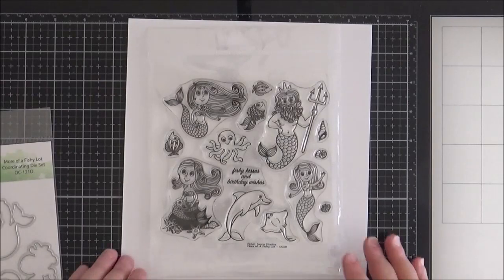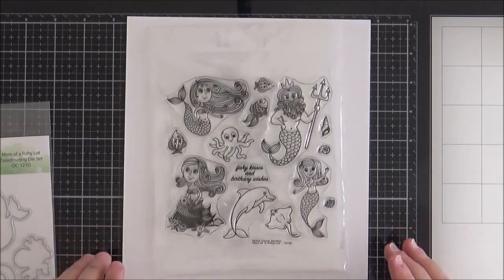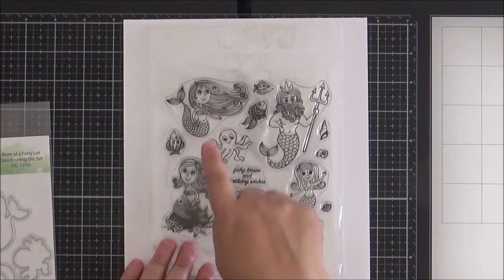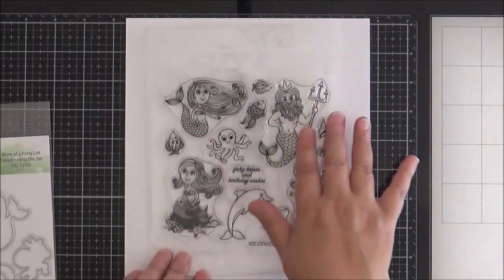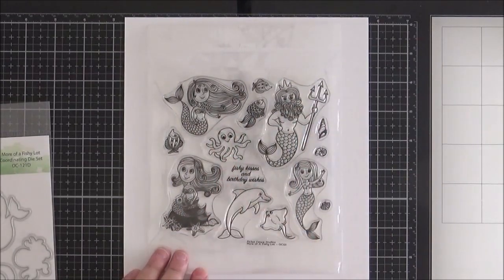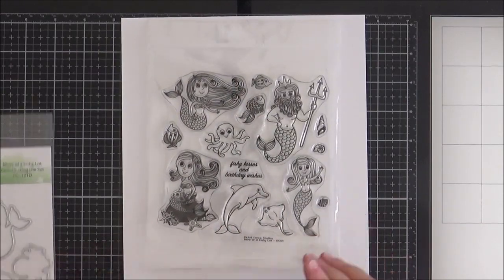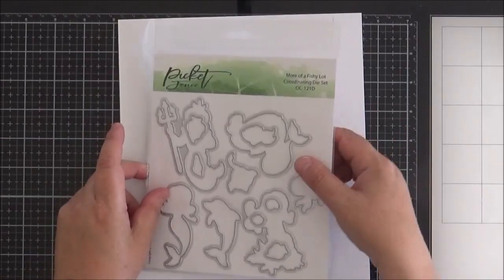And as if that wasn't enough, you have got a second set, and this is called More of a Fishy Lot. So again, you've got some little mermaids there, one of them sitting on a rock. And you've got a merman there. You've got some more fish, this adorable octopus. I love the dolphin. Such a fun set. And of course, this does also come with the coordinating dies.